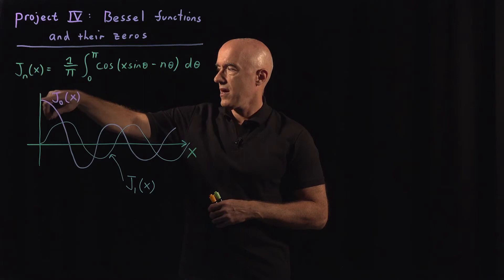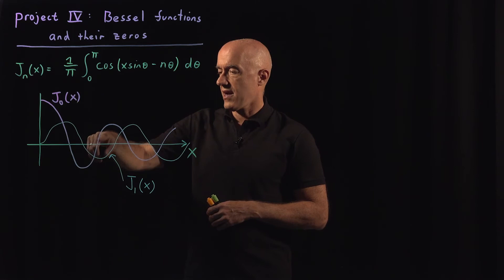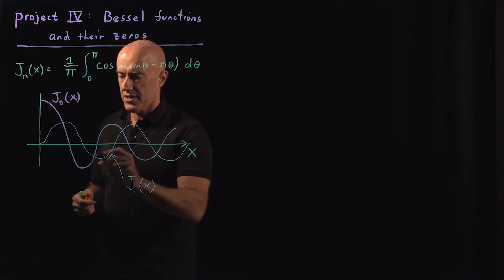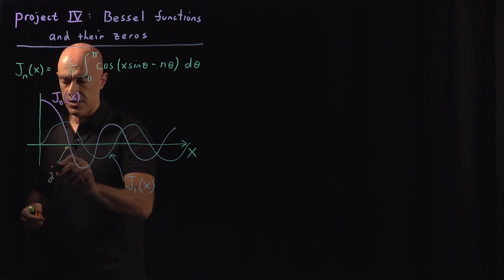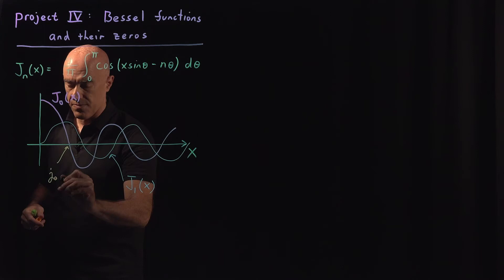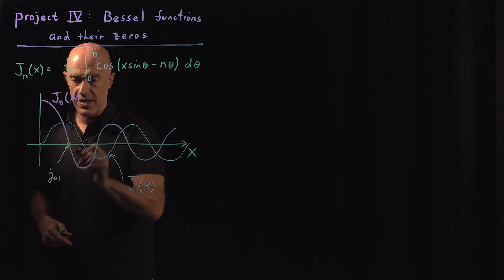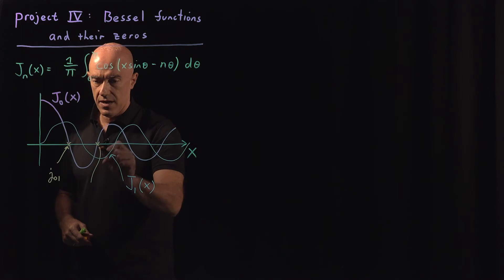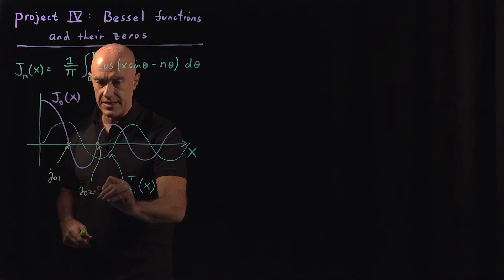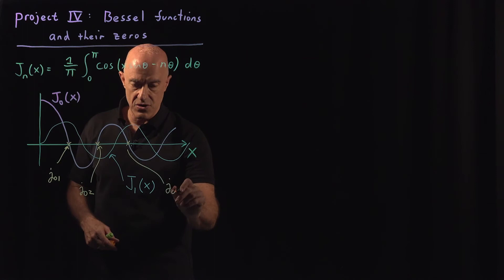If you look at J₀(x), it will start up here on the axis, then come down and cross the x-axis here, then a second time, then a third time, and then a fourth time. Those are what are called the zeros. This first crossing is what I will call j of the zeroth Bessel function, first zero — j_{0,1}. The second crossing would be j_{0,2}, and the third crossing j_{0,3}, and so on.